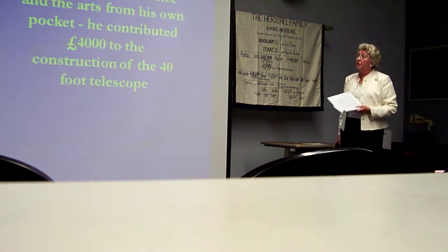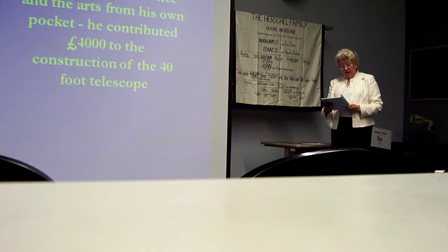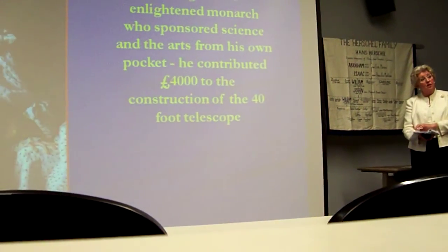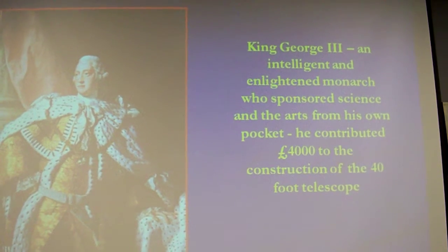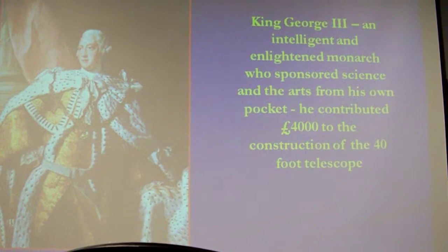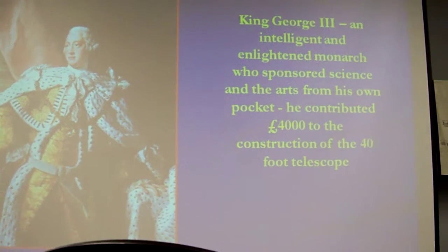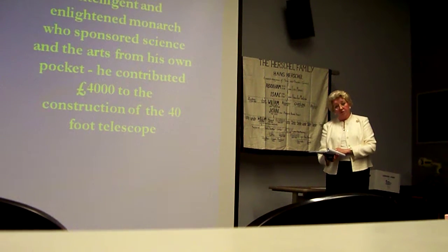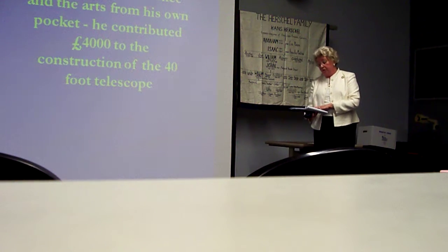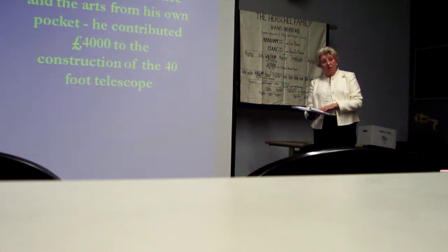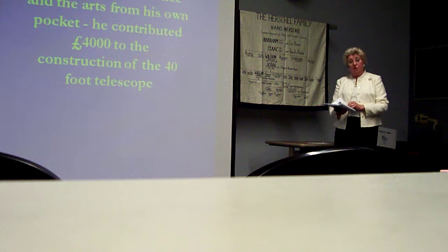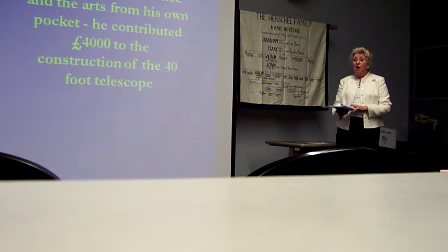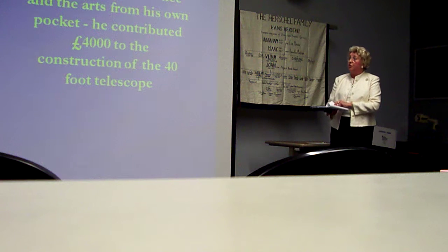Now we're with George the Third. After some complex negotiations, the king appointed William to the post of King's Astronomer, not Astronomer Royal. Astronomer Royal is a state appointment. William left Bath and moved to Slough to be near to the court at Windsor. With a stipend of 200 pounds a year, so he'd halved his income, which the king paid out of his own pocket. William found himself with only the obligation to entertain the royal family and their guests and show them the heavens through his telescopes. Apart from that, he was free to devote himself entirely to astronomical research.